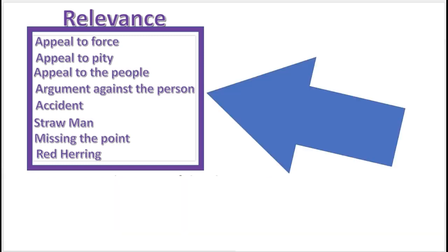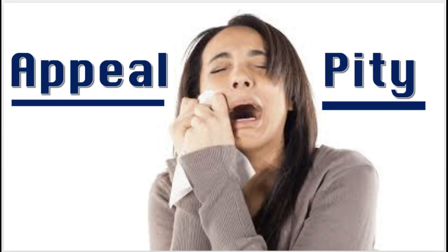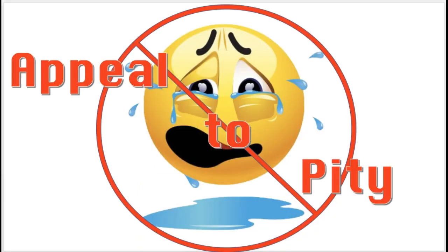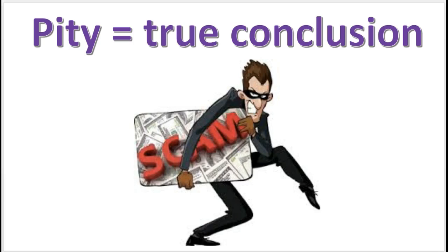We're starting with the fallacies of relevance, which means the fallacy occurs when the premise is logically irrelevant to the conclusion. This video will explain the fallacy of appealing to pity. The appeal to pity fallacy is when the argument attempts to evoke emotional pity from the audience in support of their conclusion.